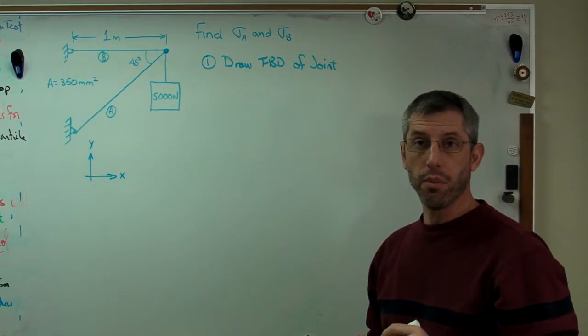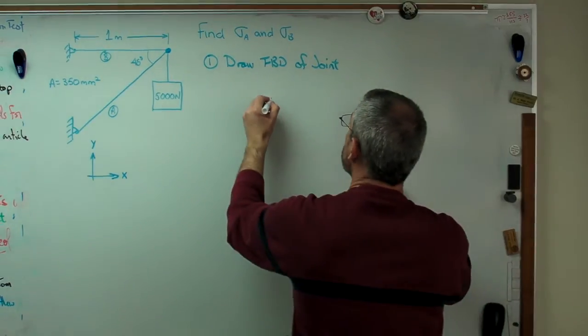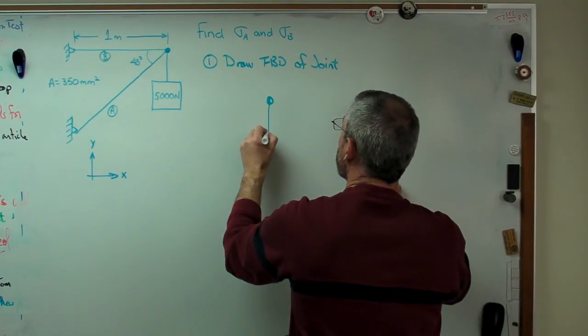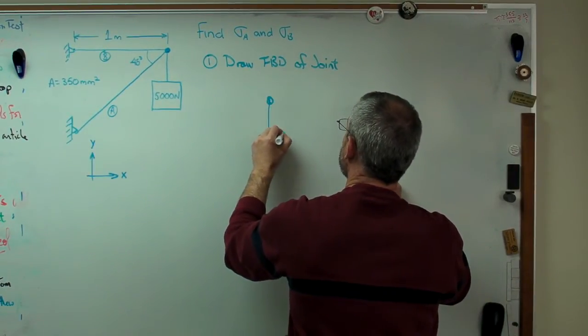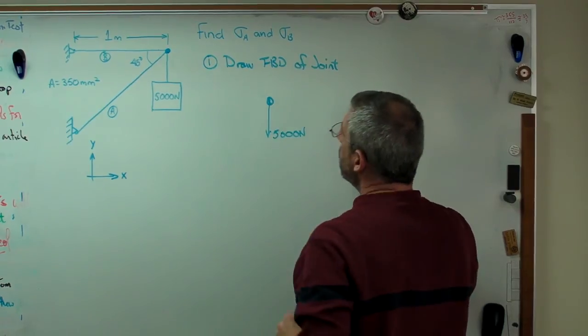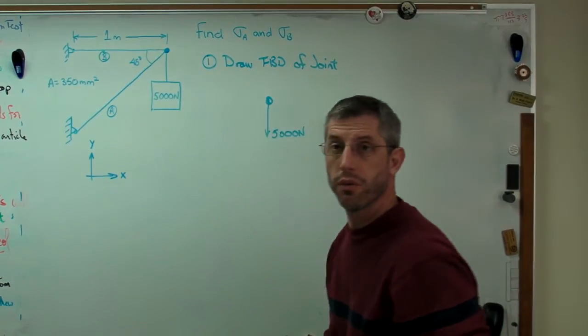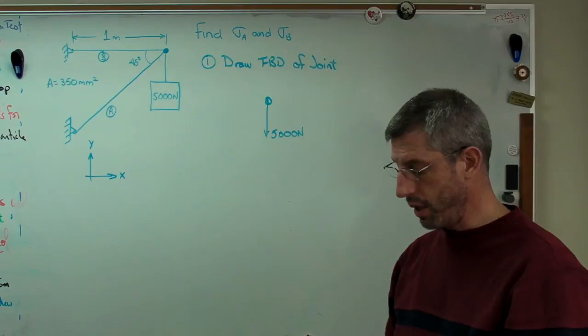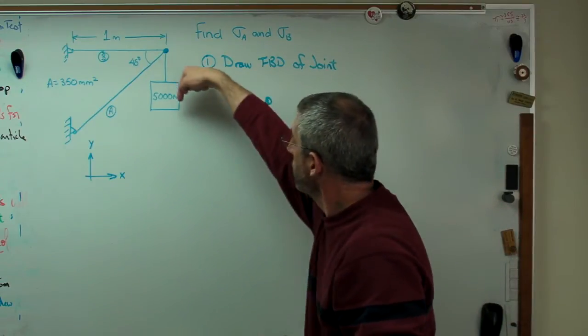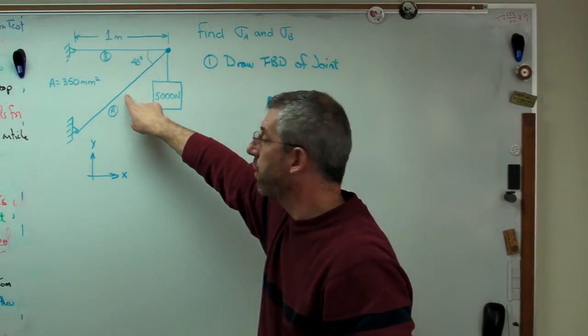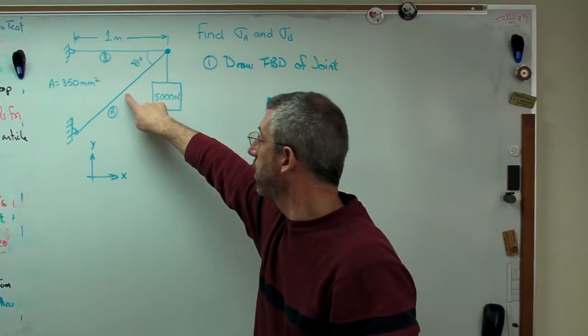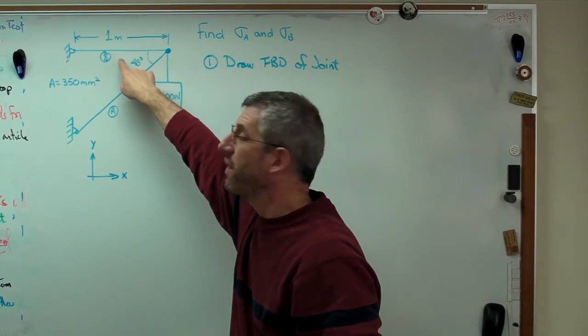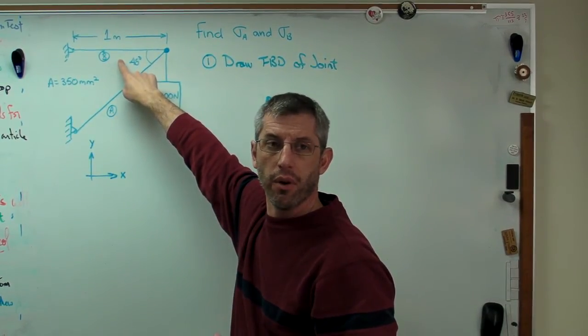I'm going to draw a free-body diagram of that joint, and it's going to be very simple. There's only three forces possible here. So there's my joint, and there's 5,000 newtons. Now, I have to assume directions of forces. Since this force is down, the vertical component of the force in A must be up.